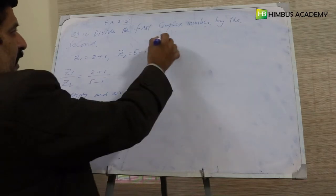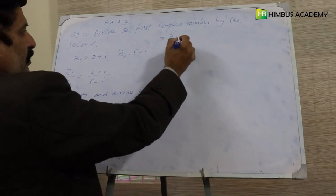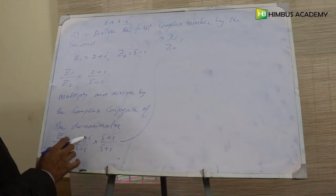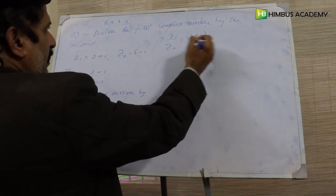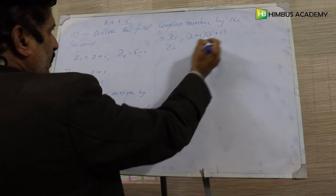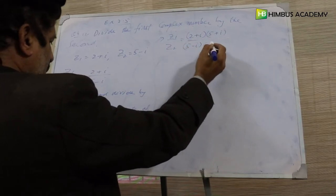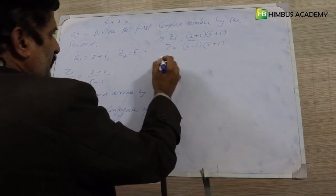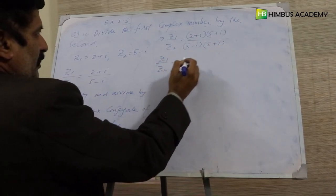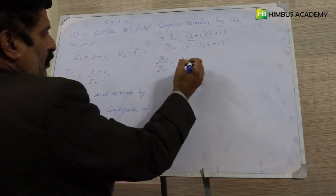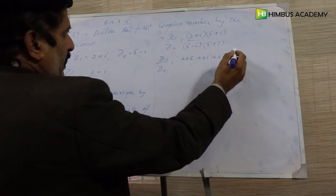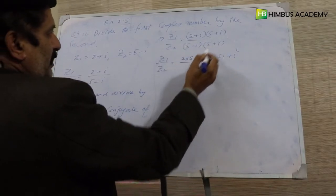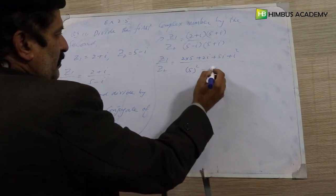z1 over z2: multiply numerator by numerator and denominator by denominator. The upper part is simple multiplication: two times five, two times iota, five times iota, plus iota square. The lower part uses the formula (a minus b)(a plus b) = a square minus b square.